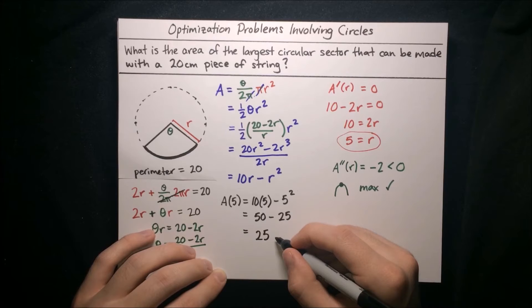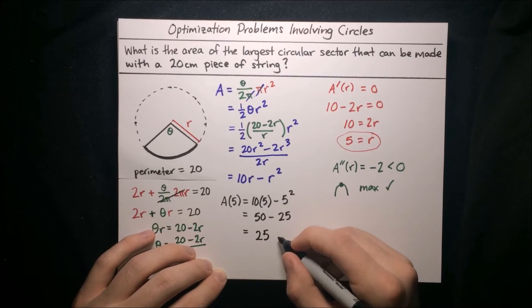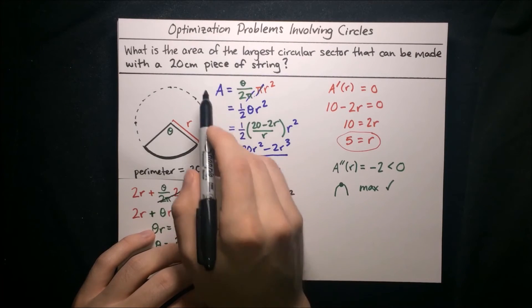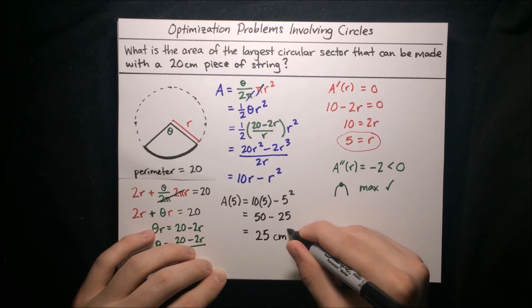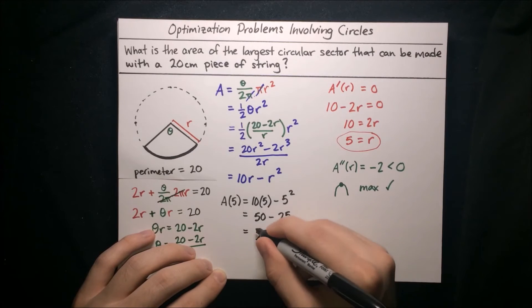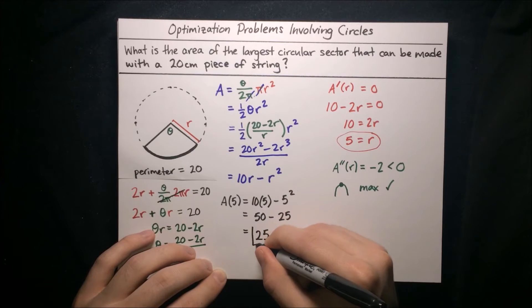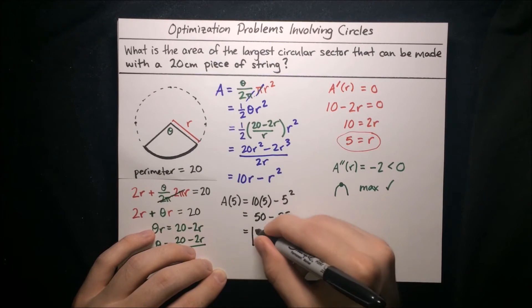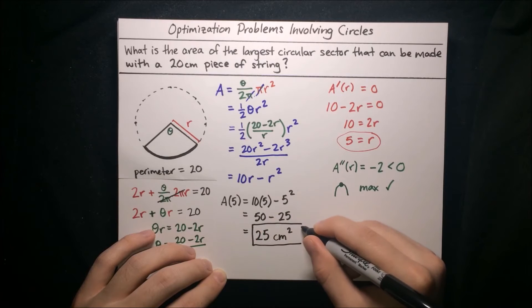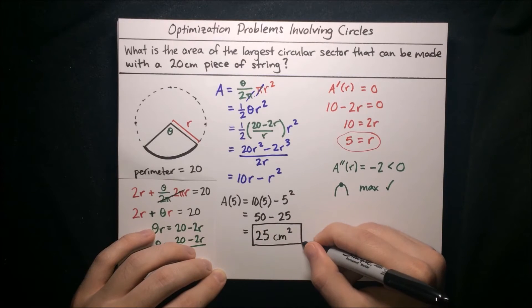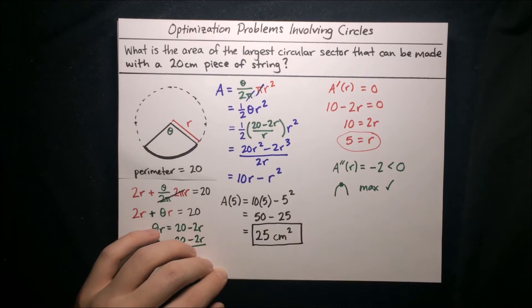The units of area are units of length squared, and length is in centimeters, so centimeters squared. That is the area of the largest circular sector that can be made with the 20 centimeter piece of string.